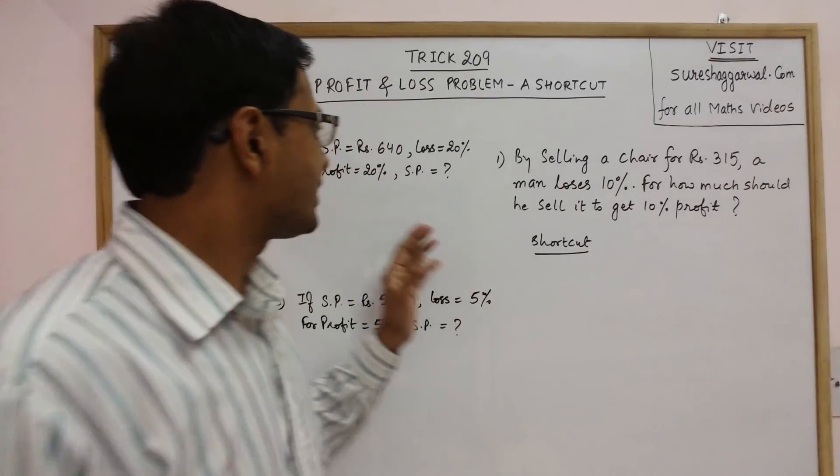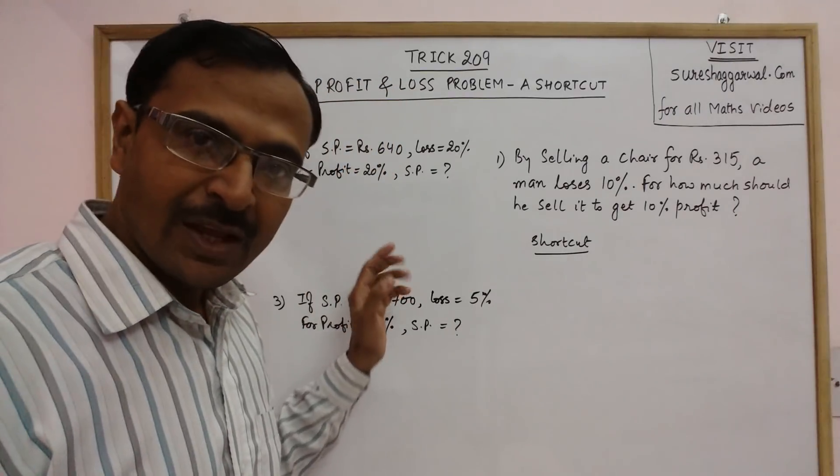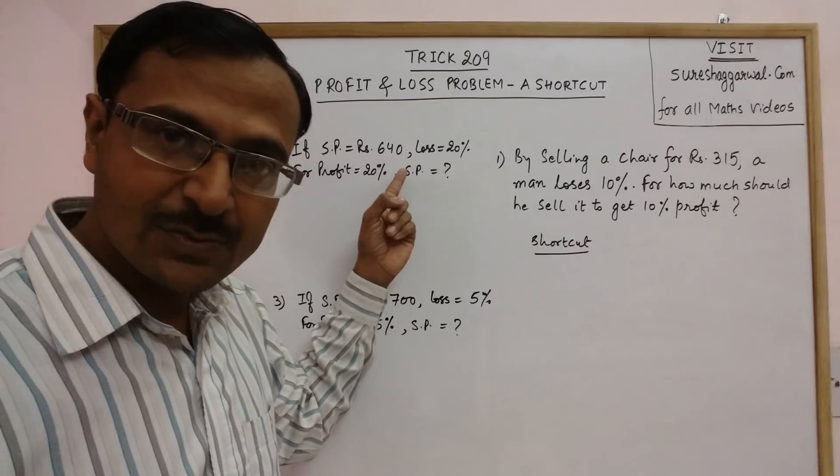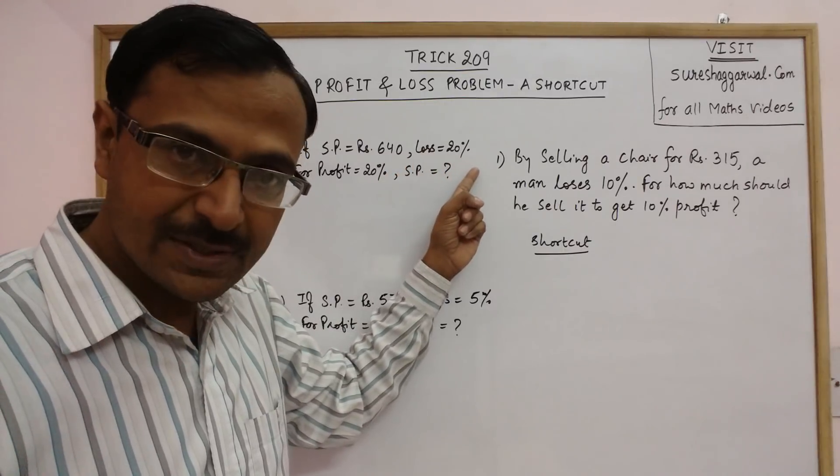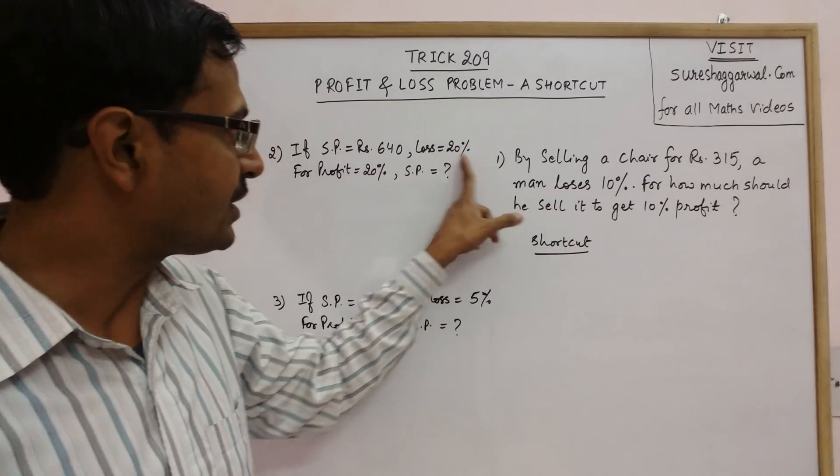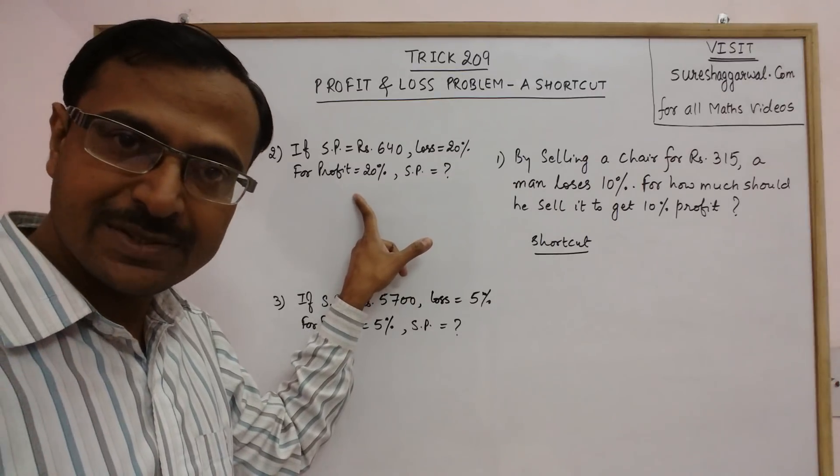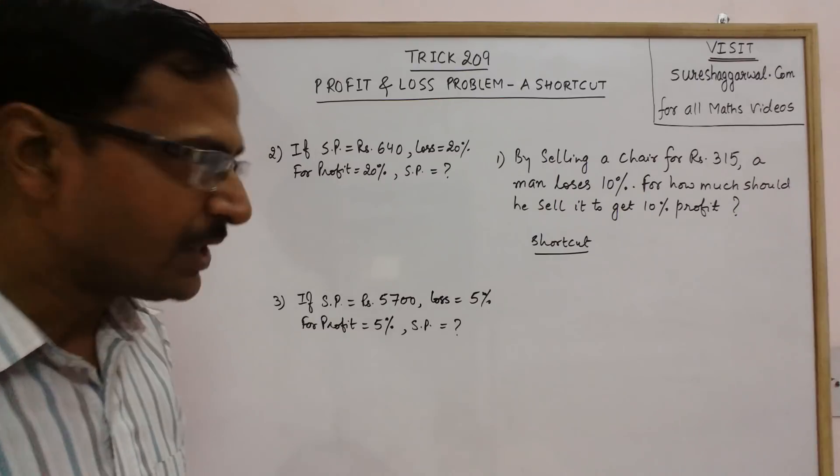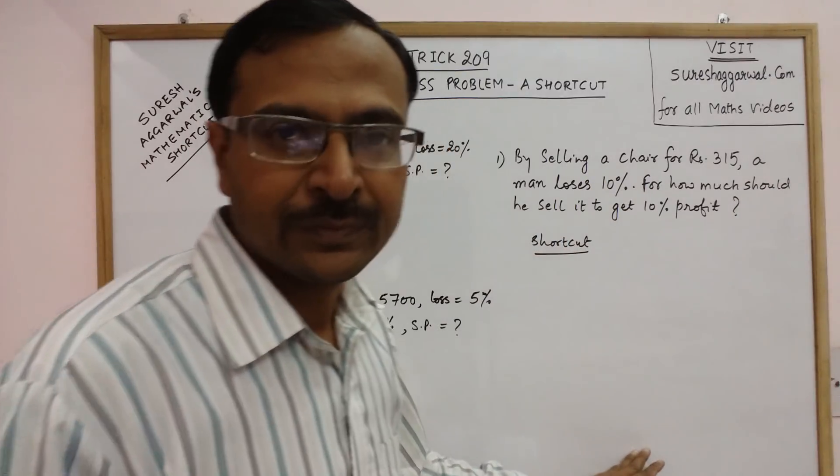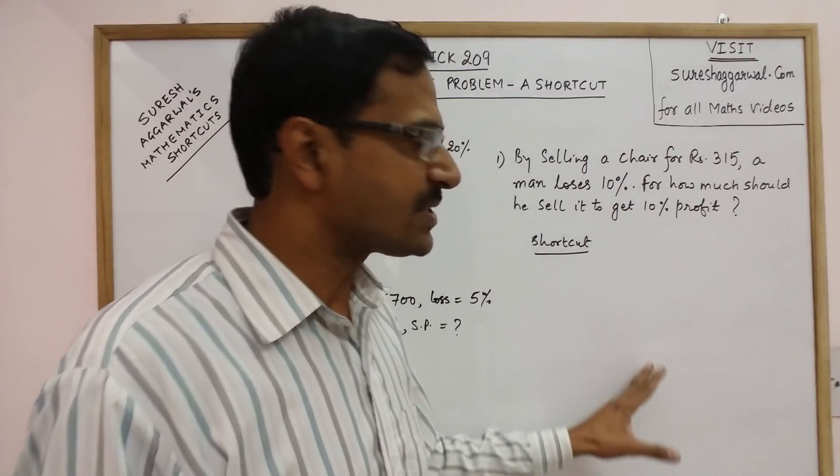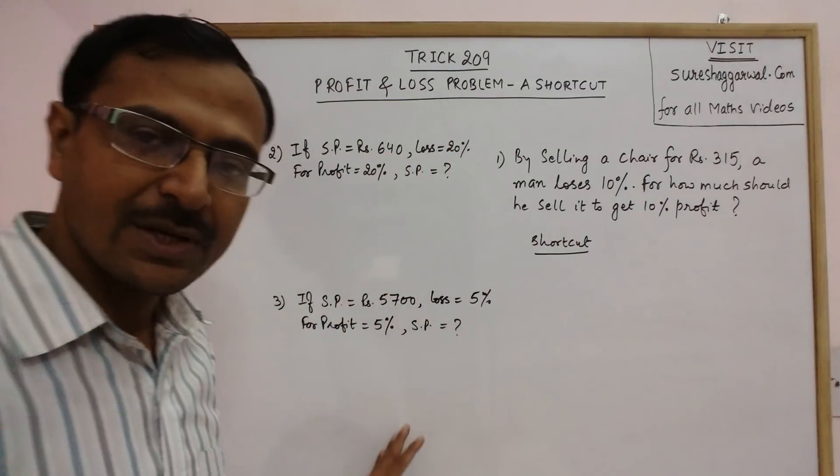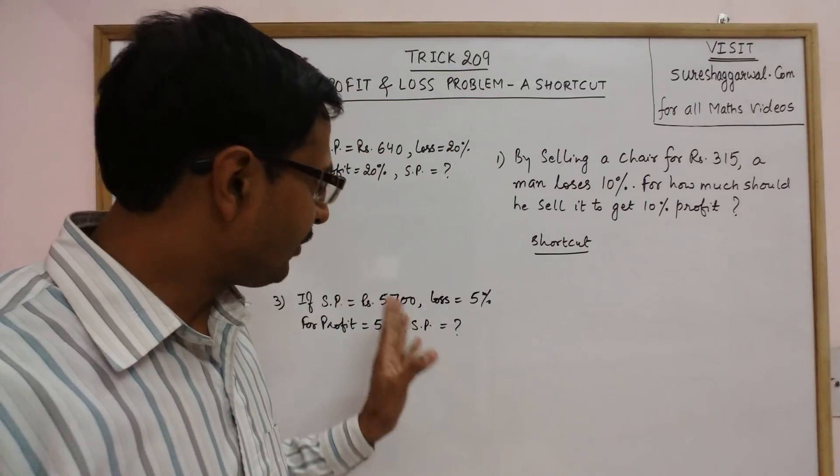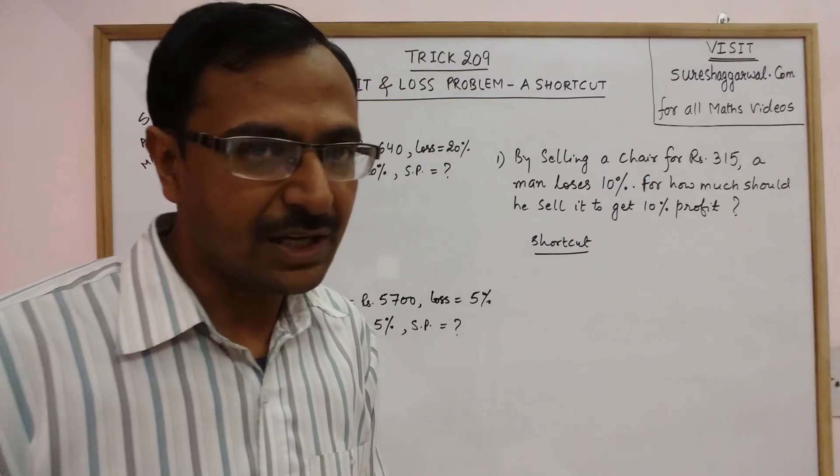Similar questions are labeled here also. We have a selling price of 640 with a loss of 20% to be converted into a profit of 20%. I will demonstrate the steps here and when you learn the steps you can solve these problems within less than 8 seconds.